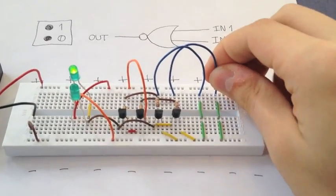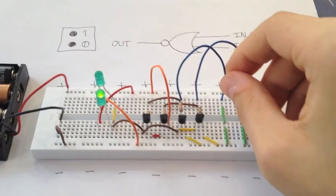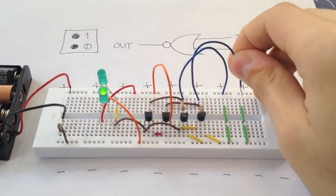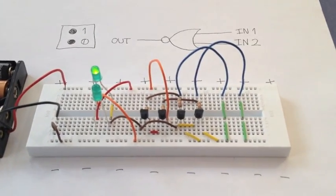So as you can see, when I set one input to high, the output is low. When I set both inputs to high, the output is still low. And if I set both inputs to low, the output becomes high.